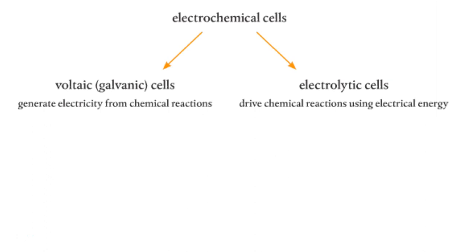Now, electrochemical cells, we've got two types. We've got voltaic galvanic cells, which generate electricity from two different chemical reactions. And then we have electrolytic cells, which actually use a battery to drive the actual chemical reaction. So one generates electricity, one uses electricity.